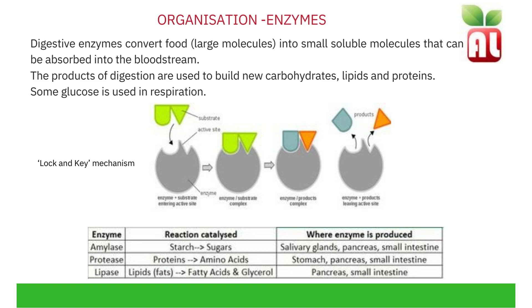Carbohydrates are large complex molecules that can be broken down by an enzyme known as amylase. Amylase is produced in the salivary glands in the mouth, the pancreas and the small intestine.